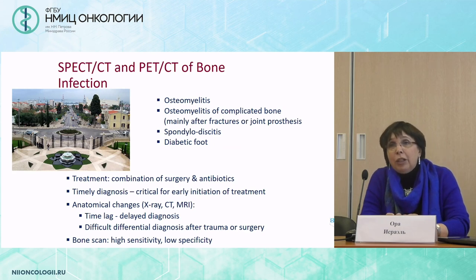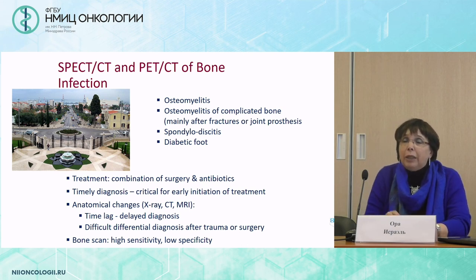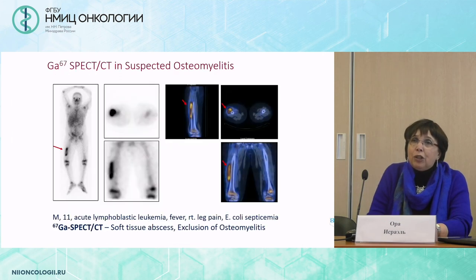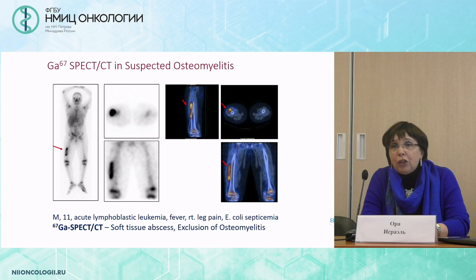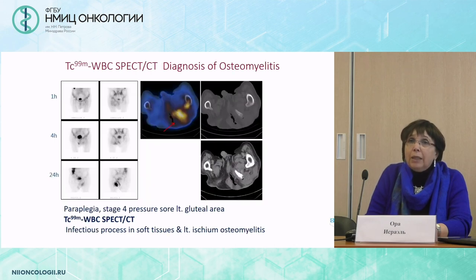Looking at the use of hybrid imaging in bone infection — osteomyelitis, osteomyelitis of complicated bone, spondylodiscitis, and diabetic foot are the main scenarios. This is one case of a young patient with leukemia who presented with fever, septicemia, and pain in his right leg. On gallium SPECT-CT we could detect the area of infection, but only on SPECT-CT could we see that this was only a soft tissue abscess and the patient had no osteomyelitis.